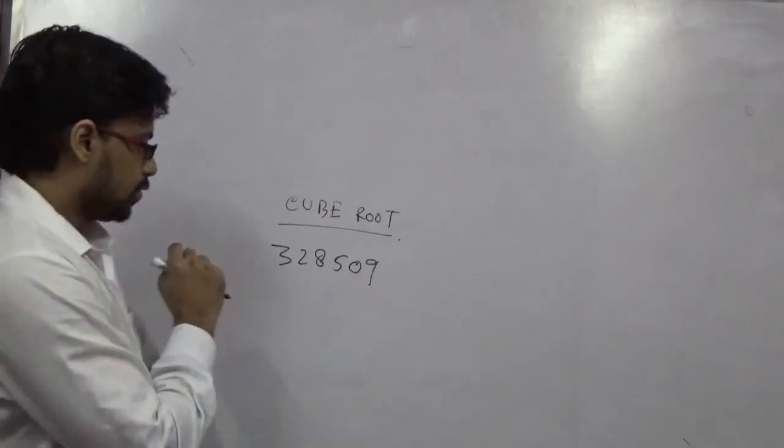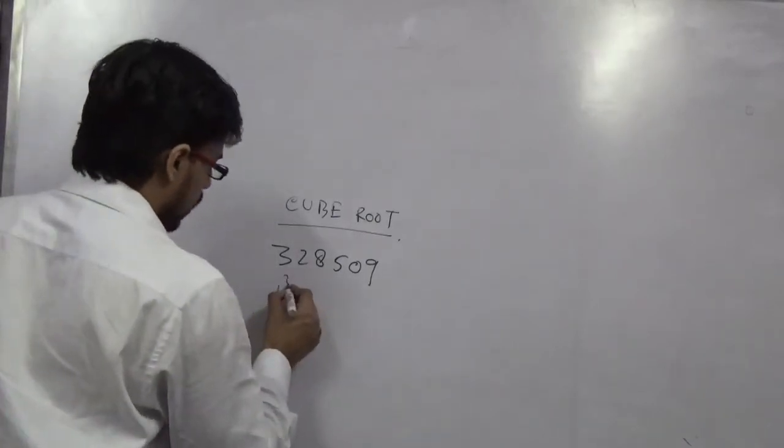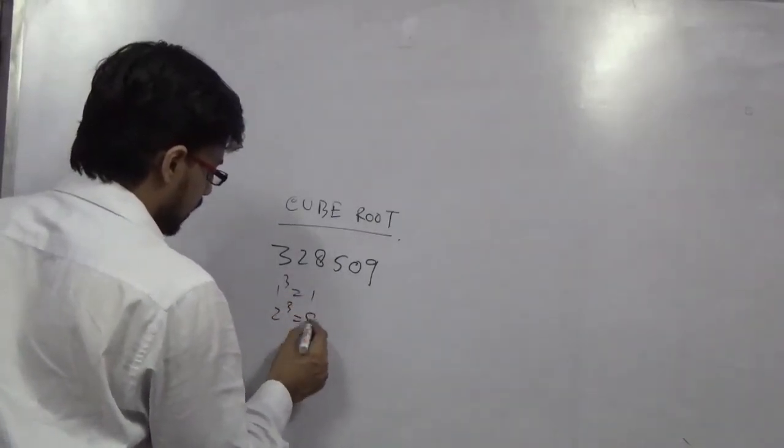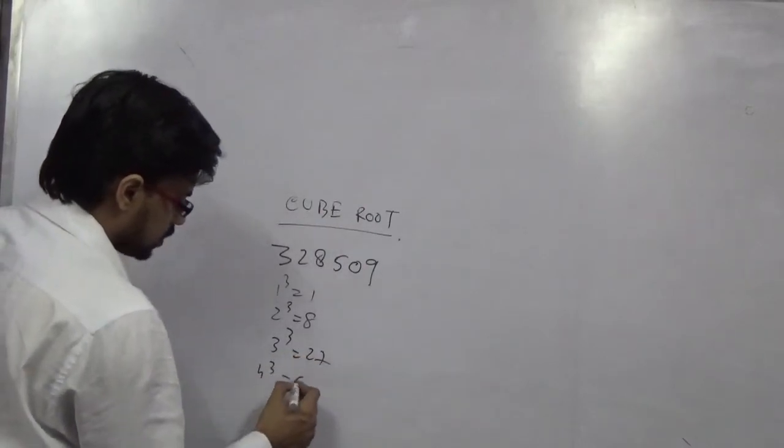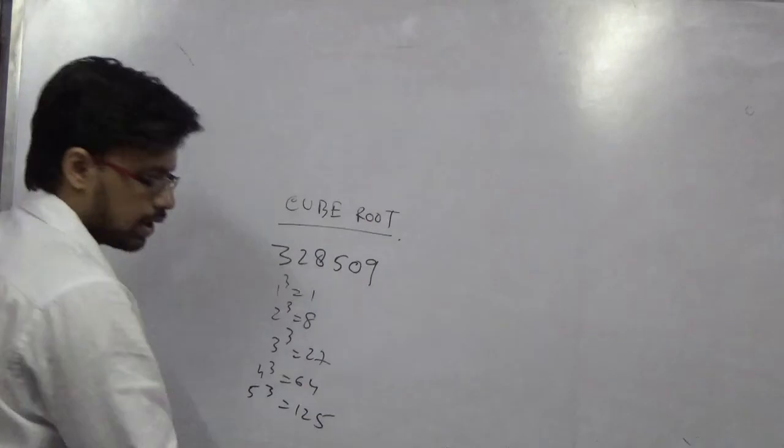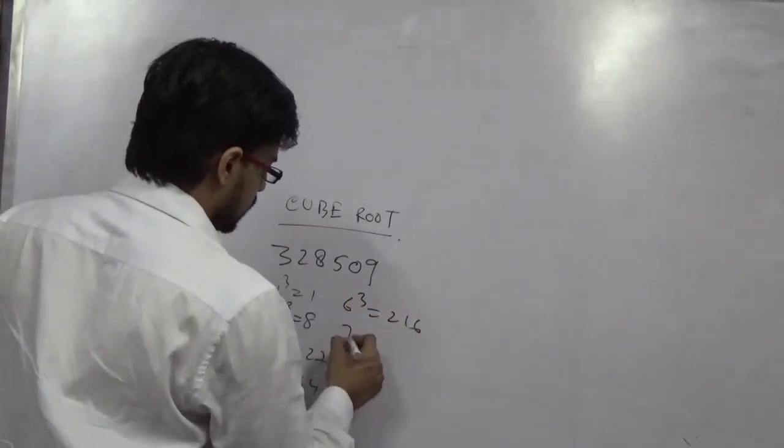That is: 1 cube is 1, 2 cube is 8, 3 cube is 27, 4 cube is 64, 5 cube is 125, 6 cube is 216, 7 cube is 343, 8 cube is 512, 9 cube is 729. These are the numbers which you need to remember.